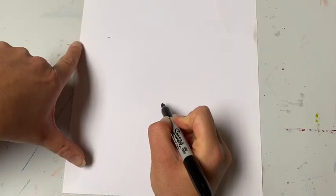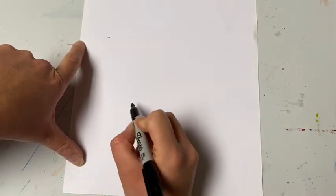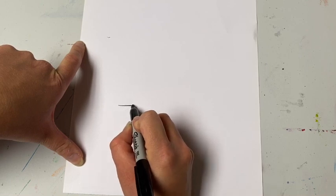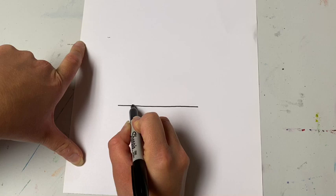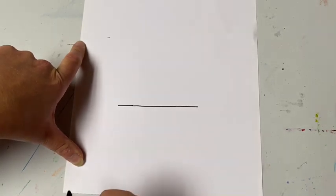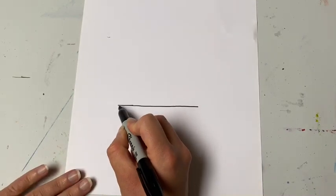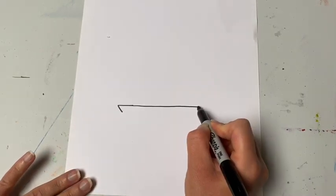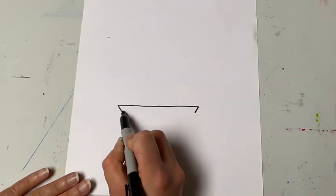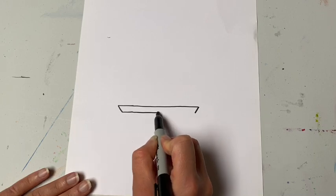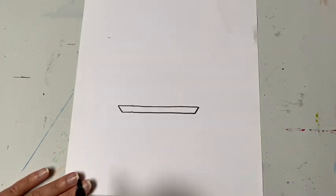So first things first is I'm going to start with the top of the cone, and I'm going to make a straight line across. Not too long, because I don't want my cone to be too wide, because then it'll look a little weird. I'm going to come down on the sides with two short angle lines. Angle means they turn in a little bit. They're not exactly straight. I'm going to connect those two lines straight across. That's the top edge of my ice cream cone.